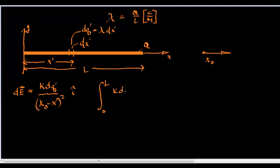And we're going to use this little formula. K, dq prime over x naught minus x prime squared, dx.